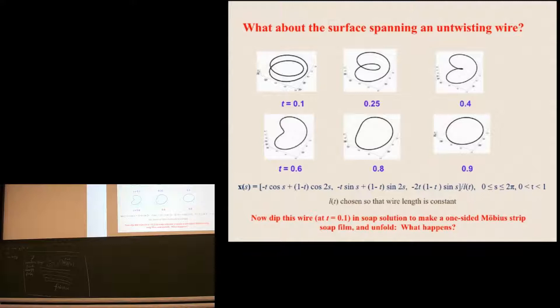So here again is the parametric representation. It's just normalized by a factor L of t chosen so that the wire length is constant throughout this process. Mathematically that's something that's going to be quite difficult to follow that minimal area surface. But let's do it experimentally. So we dip the wire at time t equals 0.1, when it's in this shape, into a soap solution to make a one-sided Möbius strip soap film and unfold it.